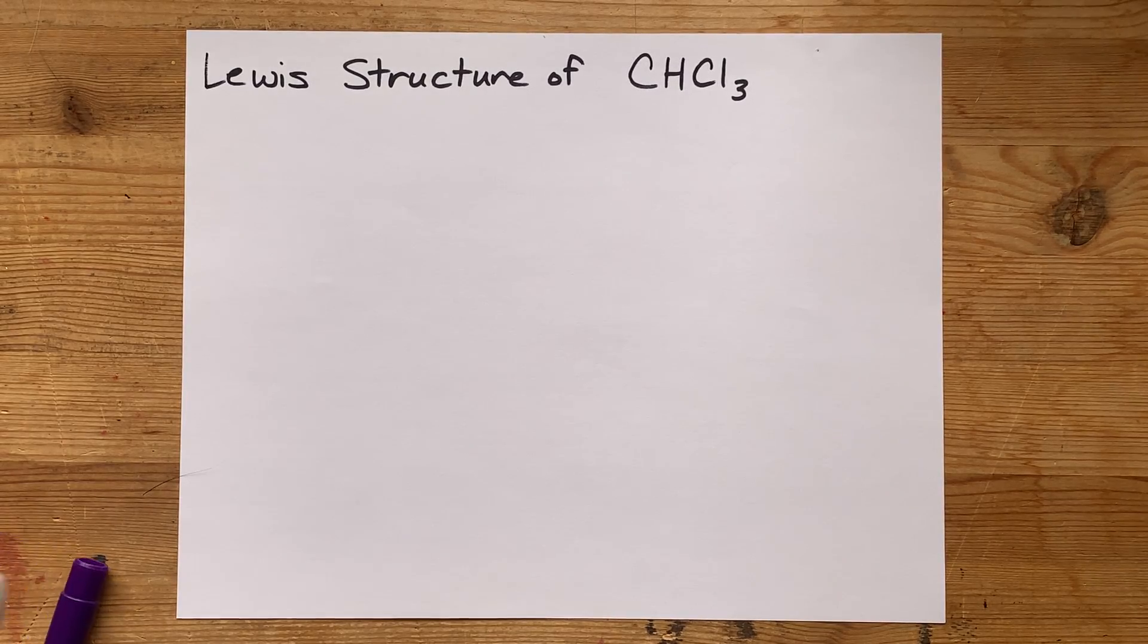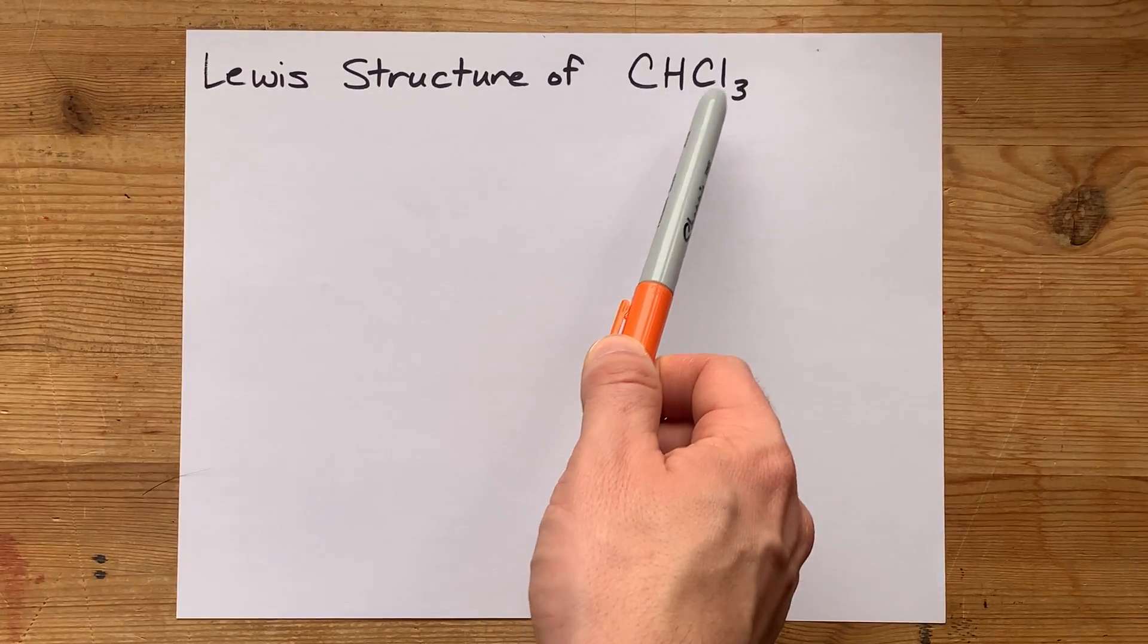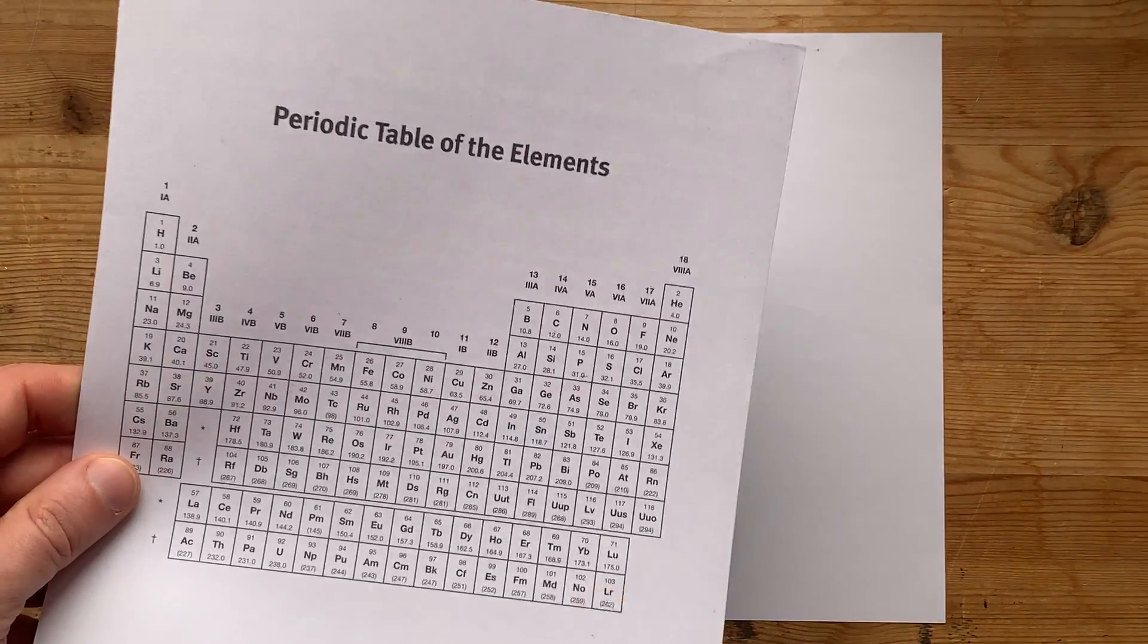We're going to draw the Lewis structure for CHCl3, that's trichloromethane.